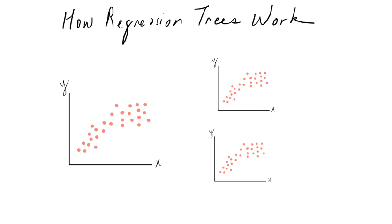Hello everyone. In this brief tutorial I will explain to you how regression trees work, using a simple example. Let us begin with the case of a single predictor variable and one single response variable. You can see on your left here the scatter plot of the data with respect to the response variable.